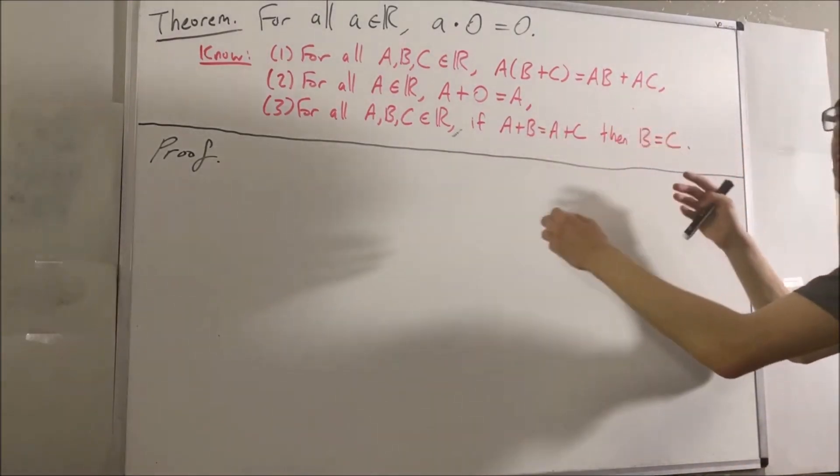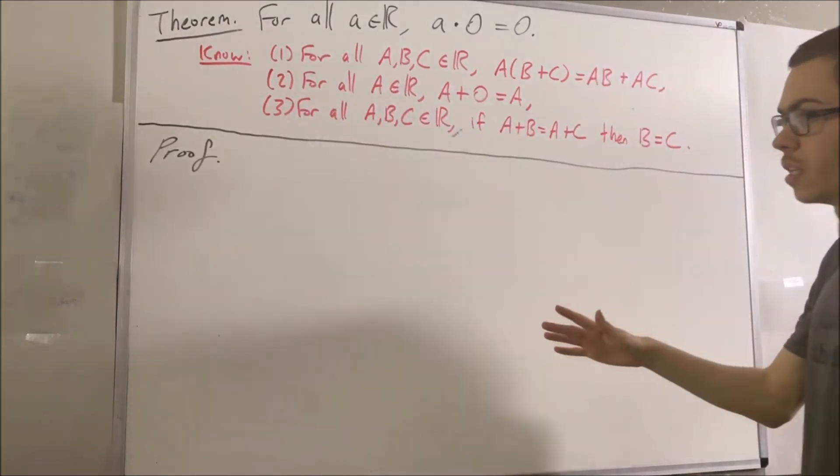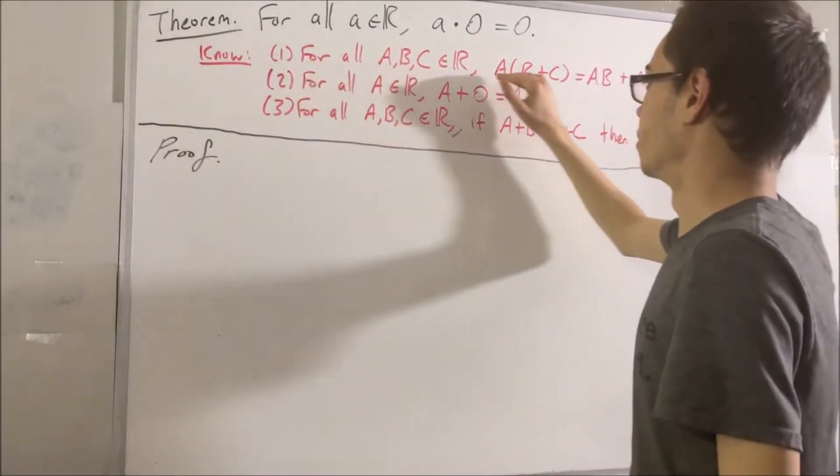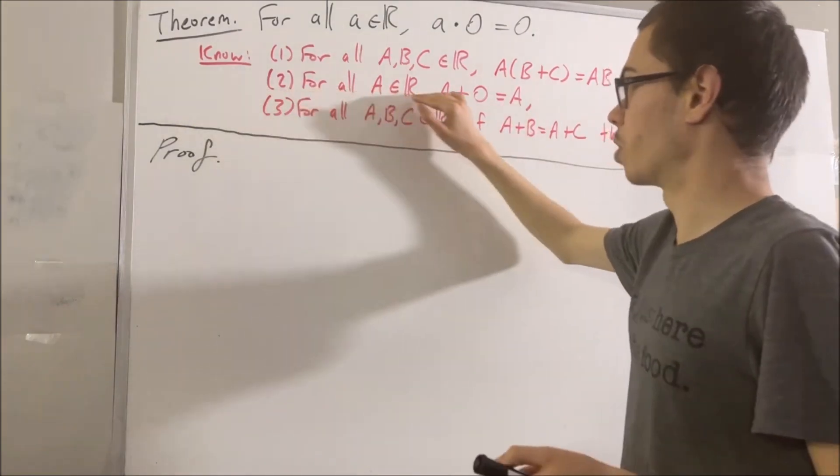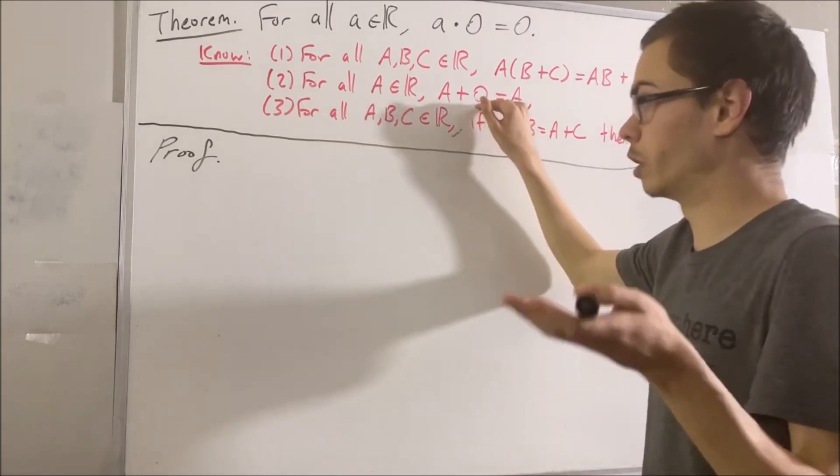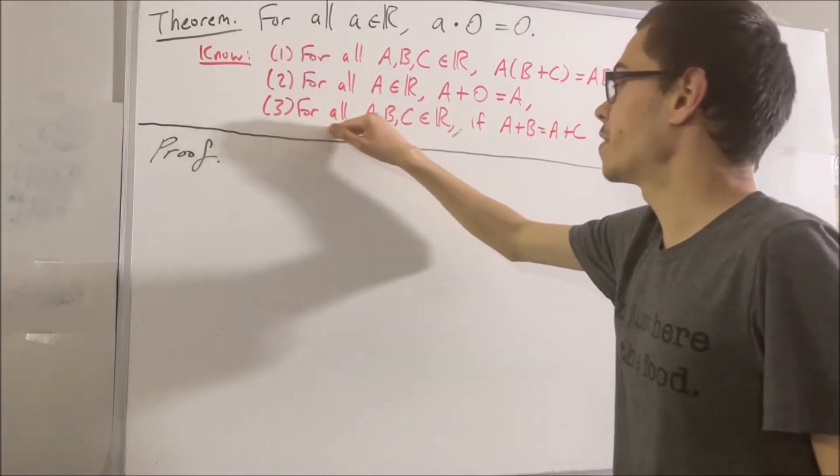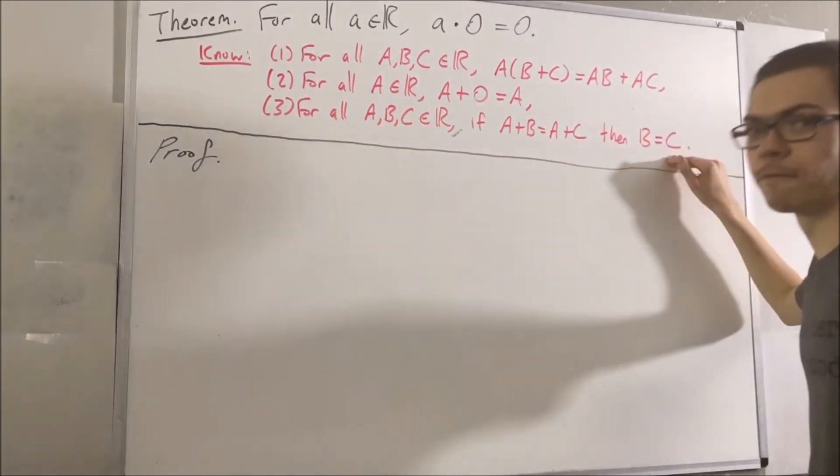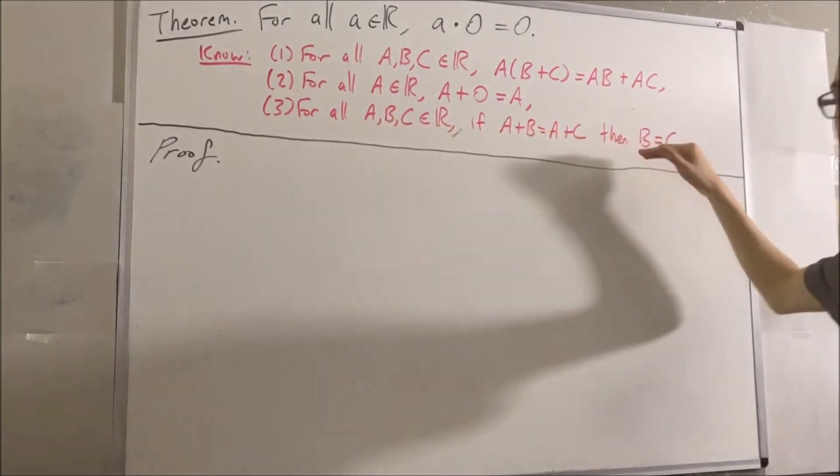And remember, these three facts come from the field properties of the real numbers. The first is one of the properties itself. The second is also one of the field properties of the real numbers. It's just that we know that zero is the only real number that satisfies this condition. And third, this fact can be deduced from the field properties of the real numbers, and we've already proven that this third fact is true.